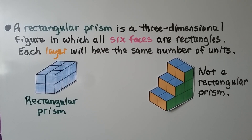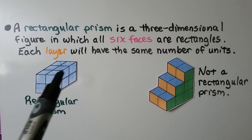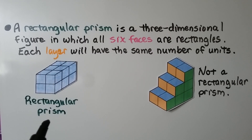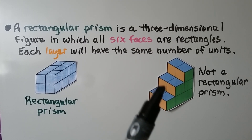Remember, a rectangular prism is a three-dimensional figure in which all six faces are rectangles. Each layer will have the same number of units. This is a rectangular prism. This is not a rectangular prism, because there are some units missing.